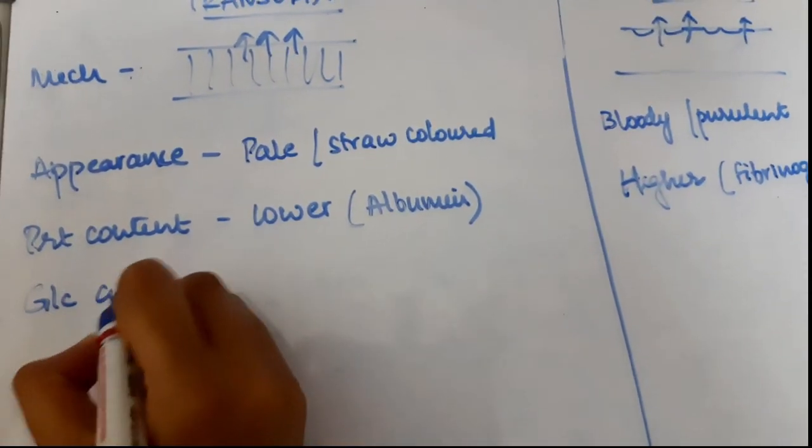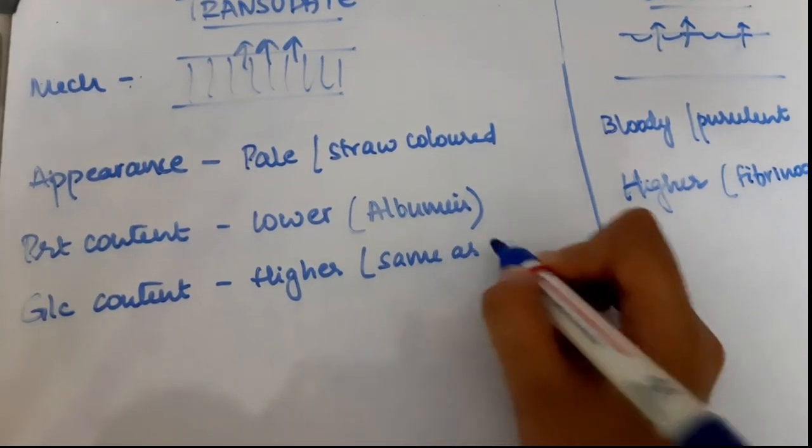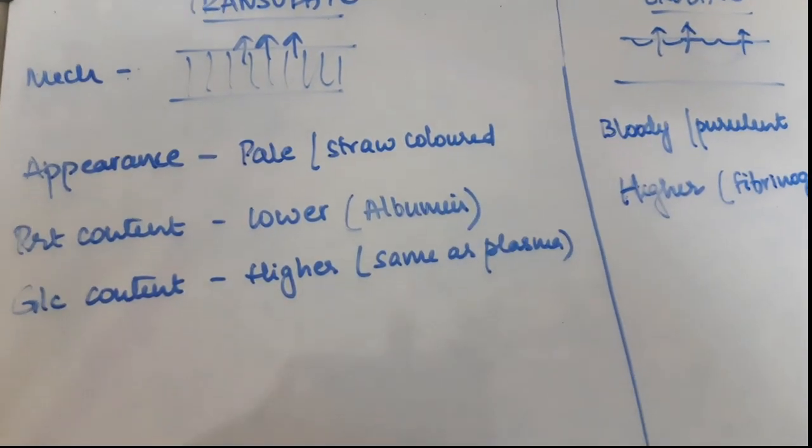But glucose content is higher in transudates. It will be the same as plasma whereas it is much lower in exudates.